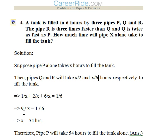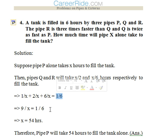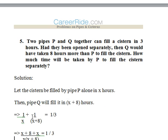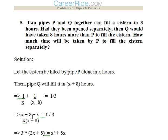Now we will add all these: 1/x plus 2/x plus 6/x, which is equal to 1/6 — the total time taken by P, Q, and R together. This gives us 9/x equals 1/6, so we get x equals 54 hours. So pipe P will take 54 hours to fill the tank alone.